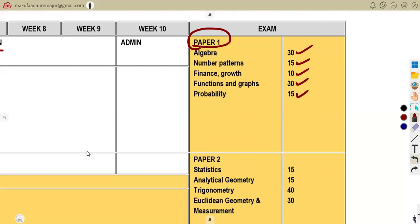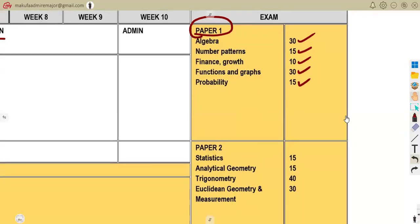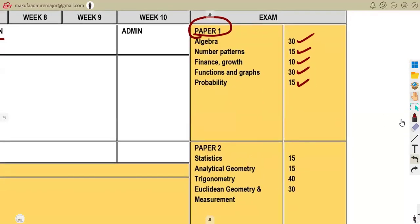Make sure you work on them. They can just shift one or two, but make sure that you revise according to the weight of the questions: the statistics, the analytical geometry, the trigonometry, the Euclidean geometry, and measurement. This is what you need for your paper two.